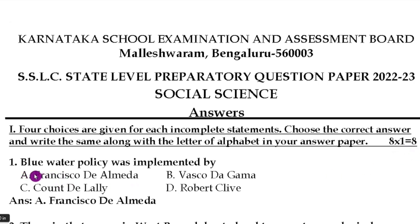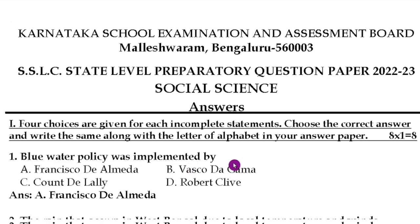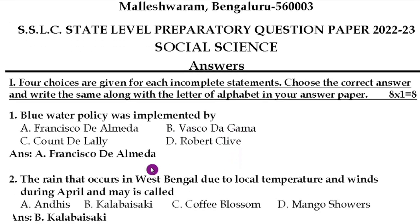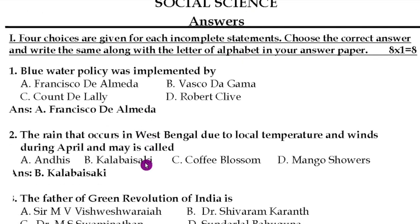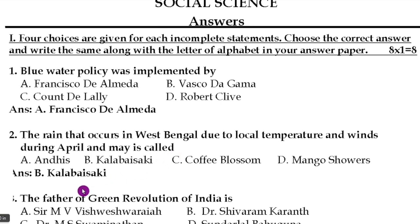Question number one: Blue water policy was implemented by dash. The correct answer is option A, Francisco D'Almeida. Question number two: the rain that occurs in West Bengal due to local temperature and winds during April and May is called option B, Kala Baisaki.